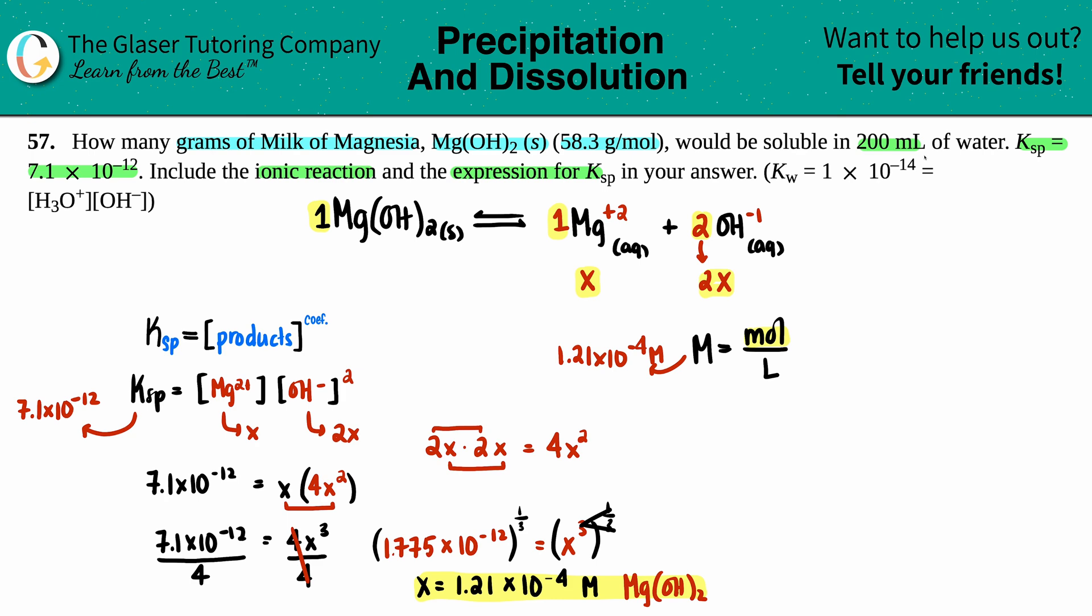200 mils, I could easily convert that to liters. Milliliters to liters, you're always dividing by a thousand, so this is 0.200 liters. Another way to write this formula if I want to solve for moles is: moles equals molarity times liters. Moles equals 1.21 times 10 to the negative fourth times 0.200.